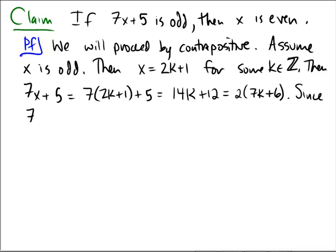Since 7k plus 6 is itself an integer, we now see that the 7x plus 5 is even.